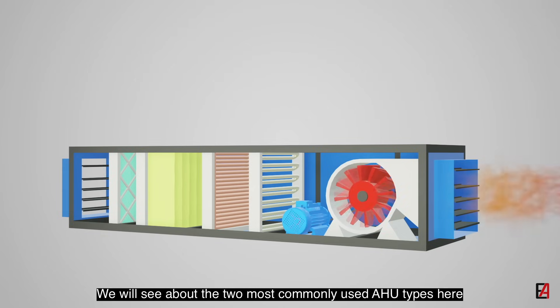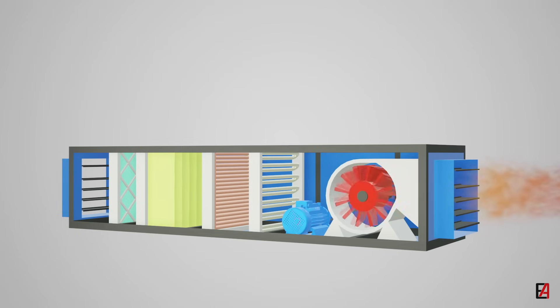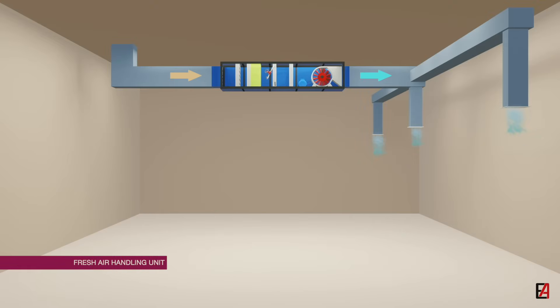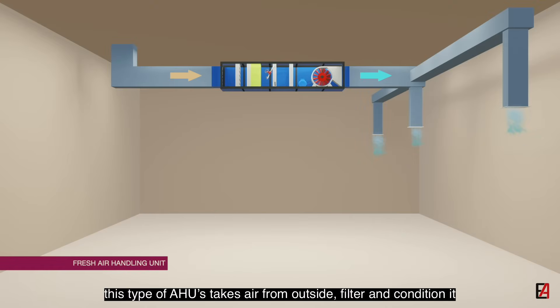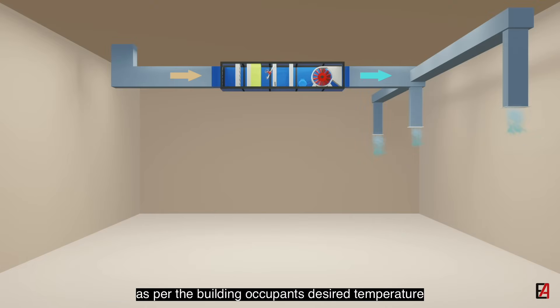AHUs can be of many types. We will see about the two most commonly used AHU types here. First one is the fresh air handling unit. This type of AHU takes air from outside, filters and conditions it as per the building occupants' desired temperature and provides it to the space. This is called a 100% fresh air system as the air being used is purely fresh air from outside.